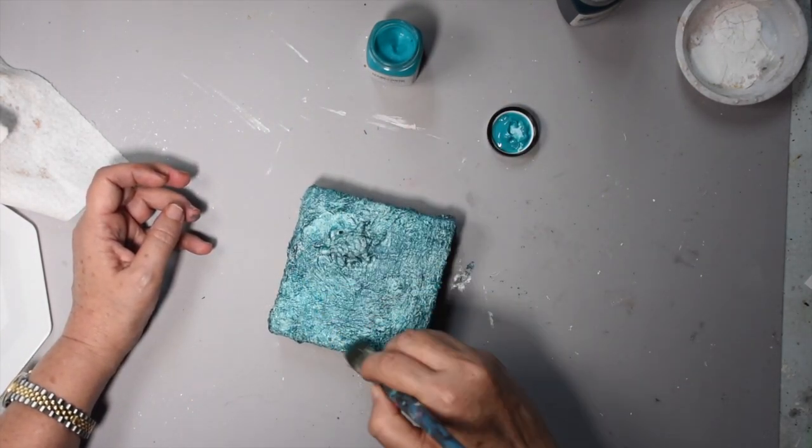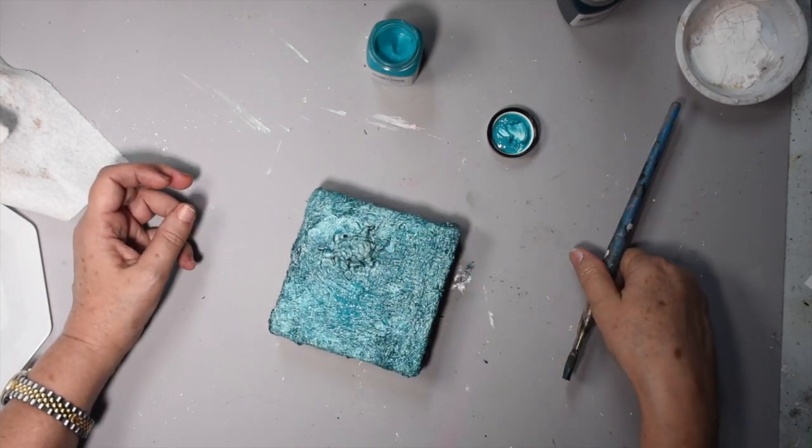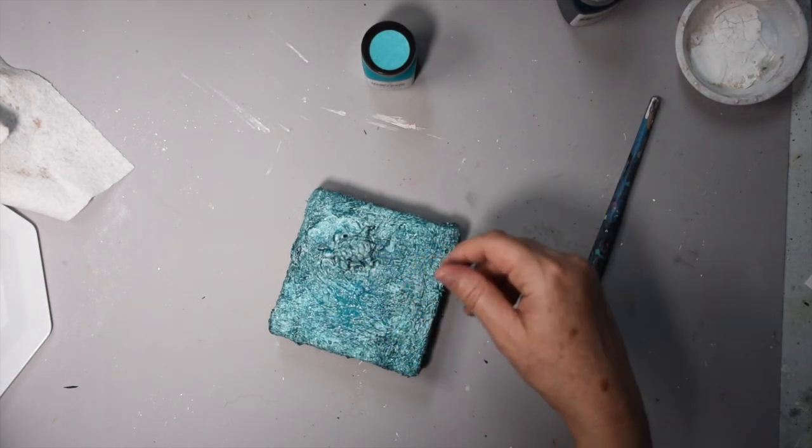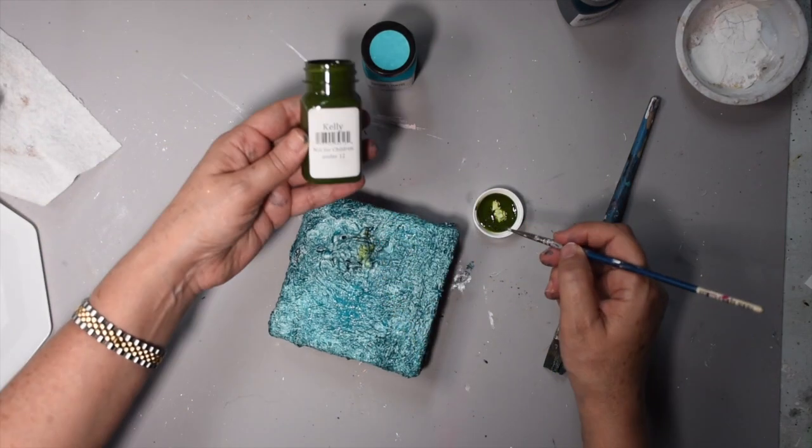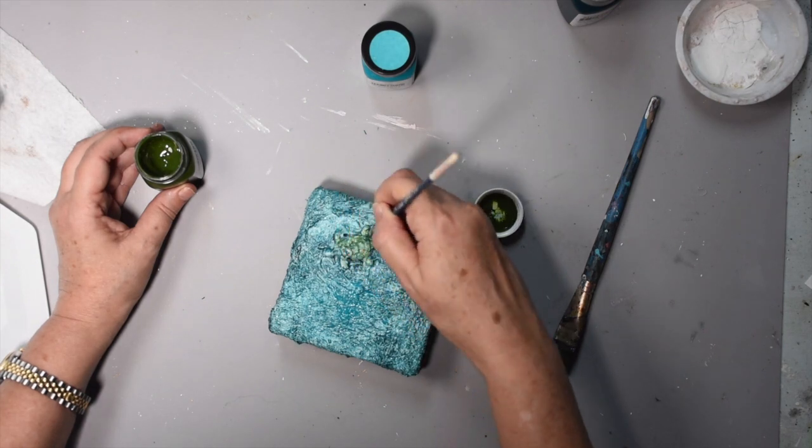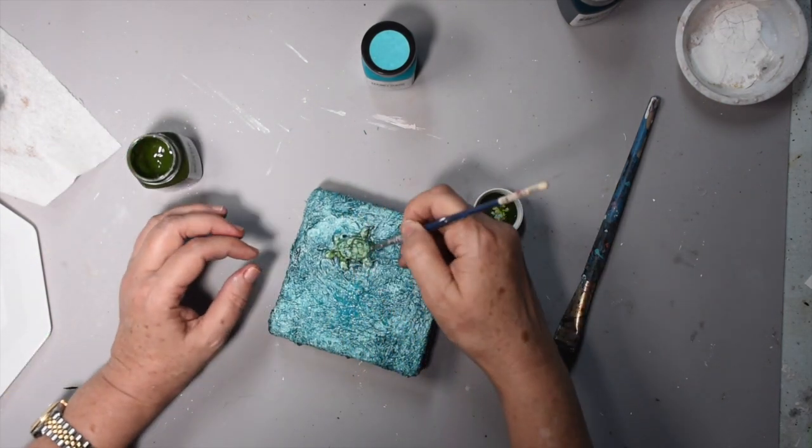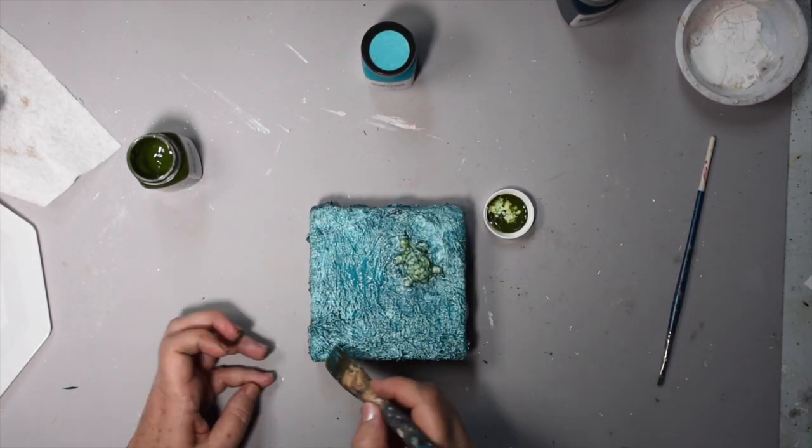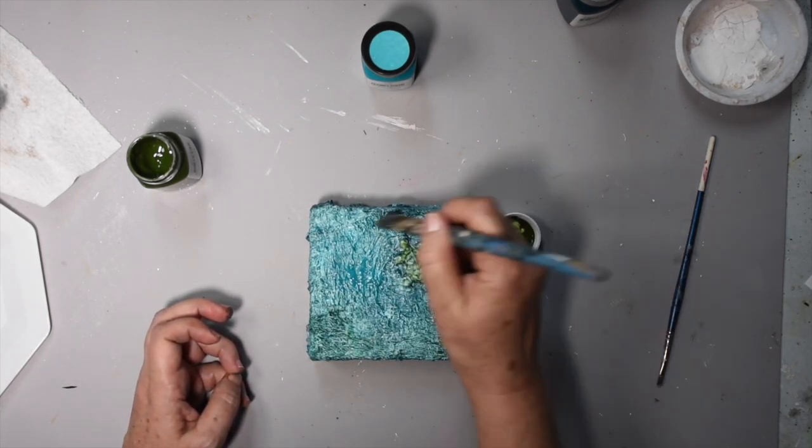Now we're going to use the Kelly Green from the Shine dimensional paint, and we are going to color in the turtle. You're going to use a fine brush for this because you don't want it to smudge around the edges. Once you're finished coloring that turtle, just add a few highlights here and there to the canvas—not too much, we just want to keep everything uniform.